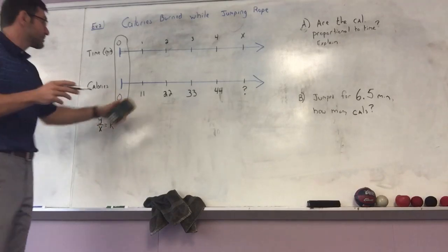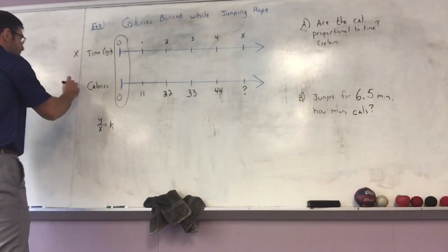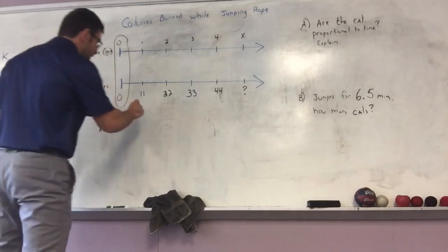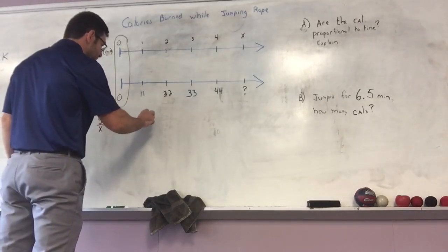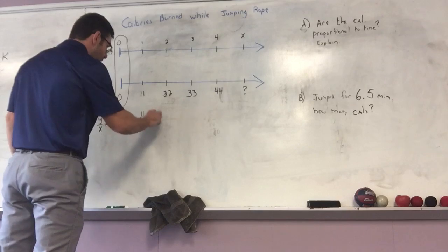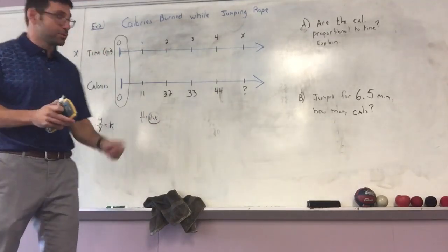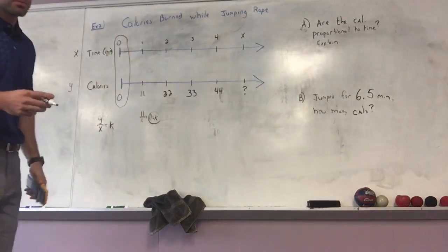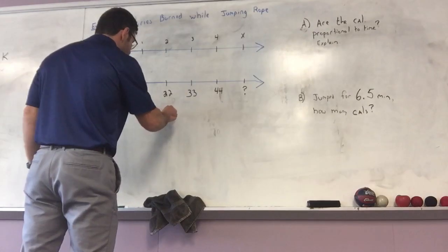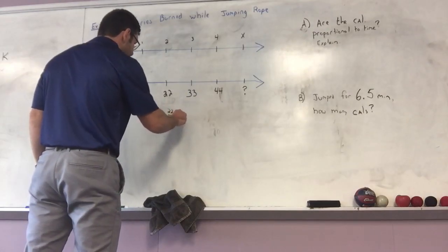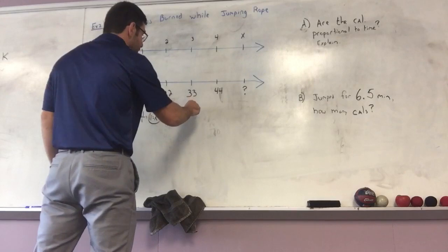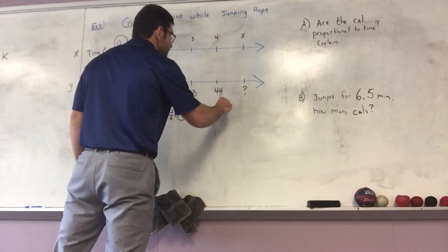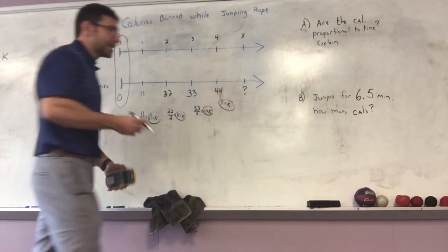To find the constant, I label x and y, then take 11 divided by 1, which gives me K = 11. For this to be proportional, all constants must equal 11. Most of you can see that 22 divided by 2 also gives 11, and 33 divided by 3 gives 11. All of my constants are 11.